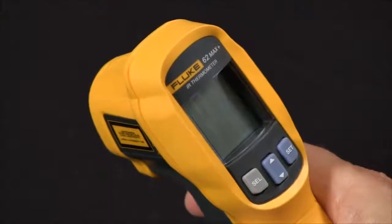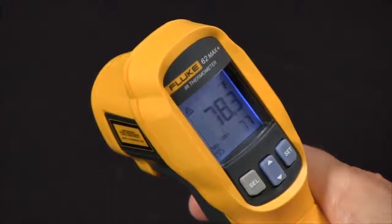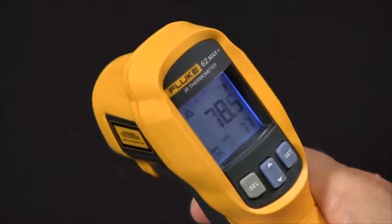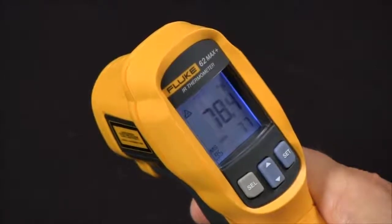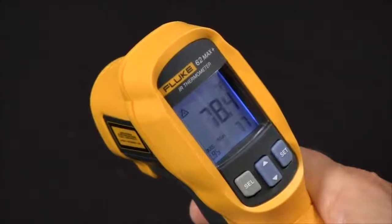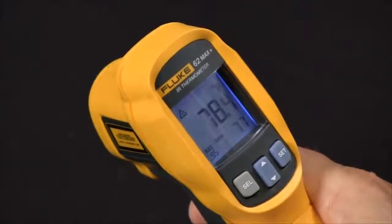The Fluke 62 Max and the 62 Max Plus are handheld IR thermometers. The 62 Max has a distance to spot ratio of 10 to 1 and the 62 Max Plus has a distance to spot ratio of 12 to 1.